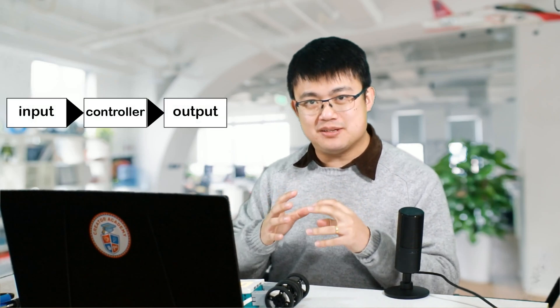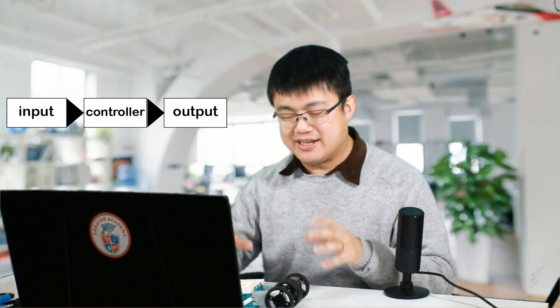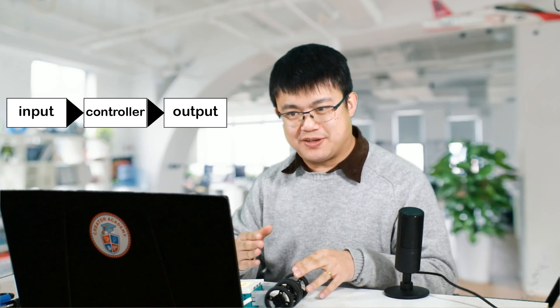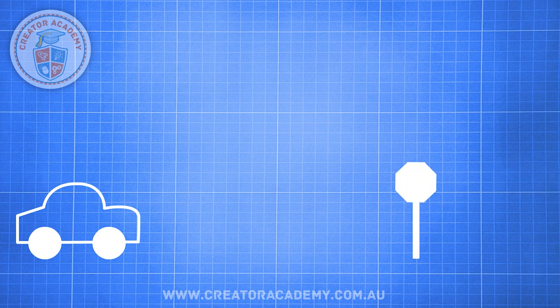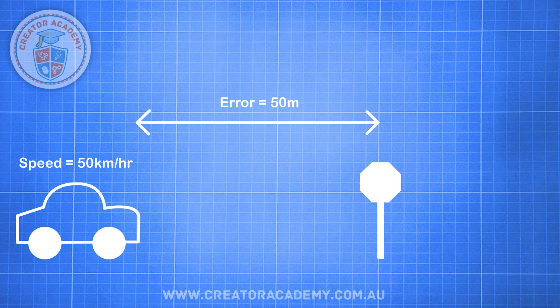PID controllers are designed just like any other controller — they take an input and then, from the available information, send an output signal to the actuators, or in our case the motors, to fulfill a specific task. Imagine we are programming for a self-driving car and we want it to stop at a stop sign. We can do this by changing its speed as a function of the distance it has yet to travel. At 50 metres away, the car perceives that it is not close enough to the stop sign, so it perceives that the current error is 50 metres.